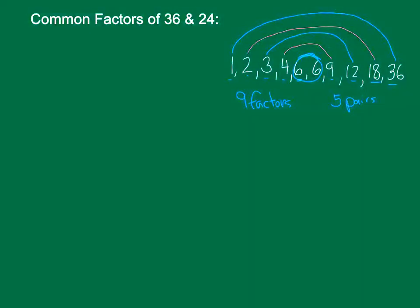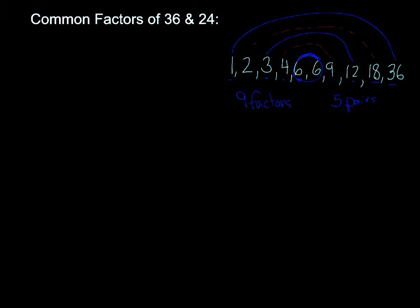I can also use the rainbows to help me find common factors between two numbers. So we've already figured out our common factors for 36. Not our common factors, just our factors for 36. Now I'm going to try and figure out some factors for 24 and see if we have any factors that are common for both numbers. If that's true, we'll see them common in both rainbows. That's the idea.